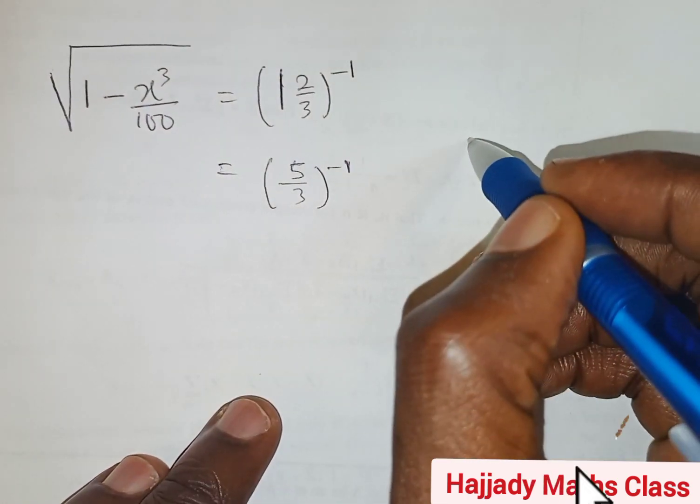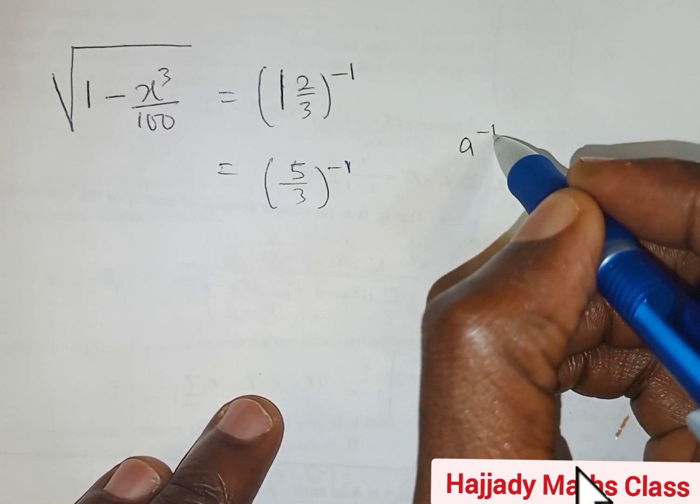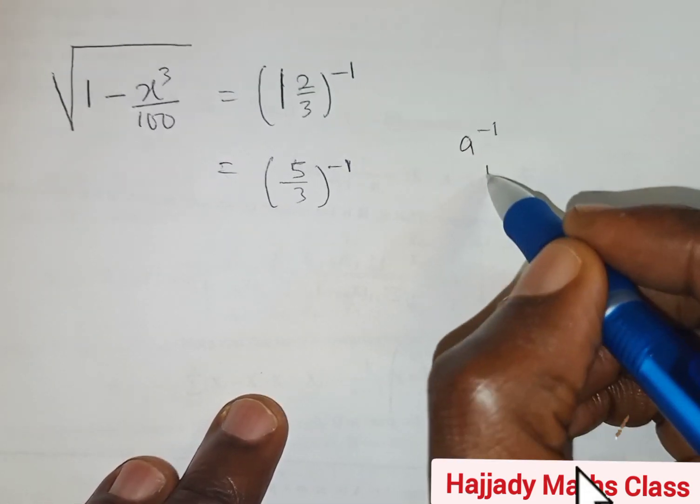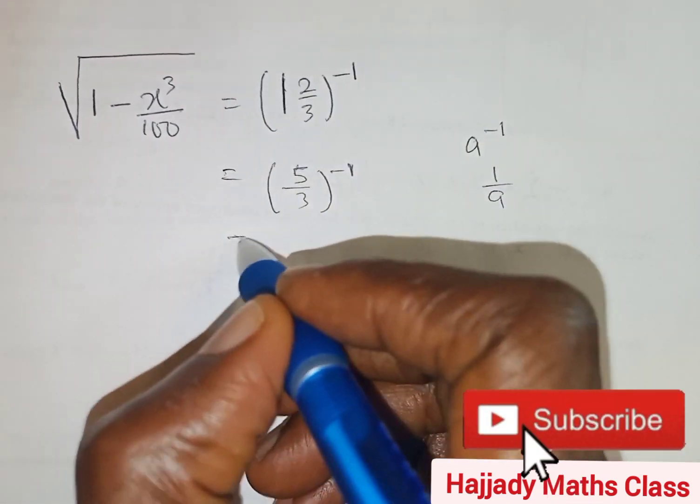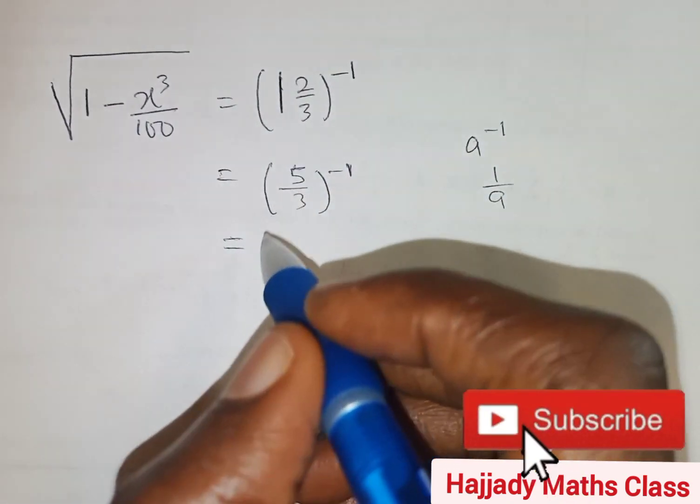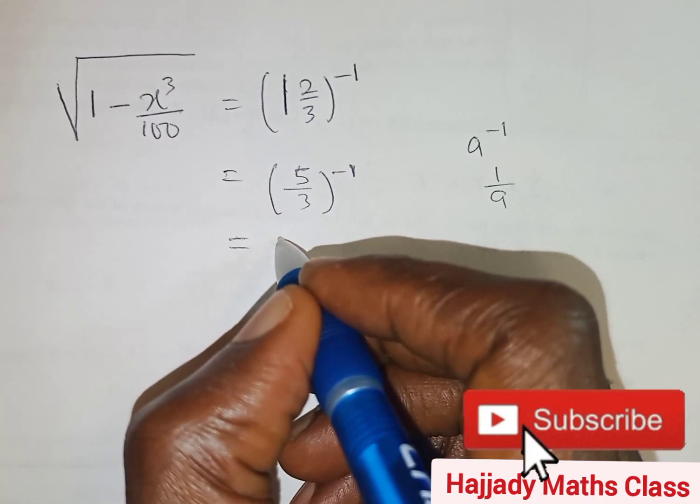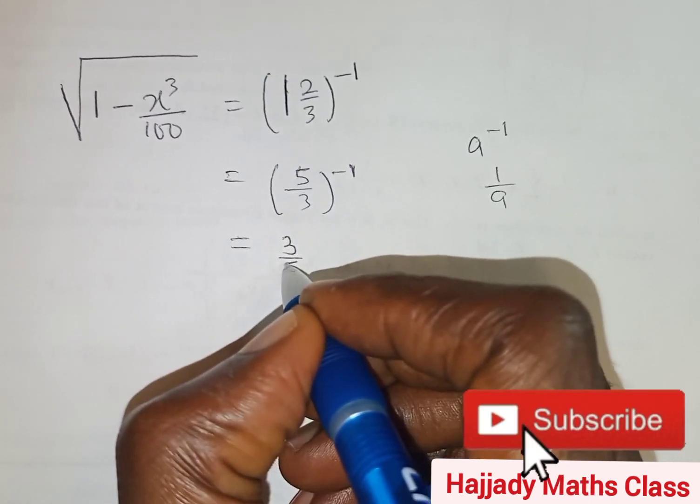And also, while we talk about reciprocal, a raised to the power minus 1 is the same thing as 1 over a. So that shows that this is the same thing as finding the reciprocal of the value in the bracket, which is also equal to 3 over 5.